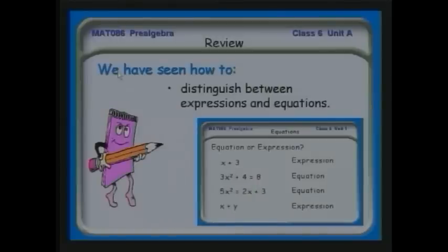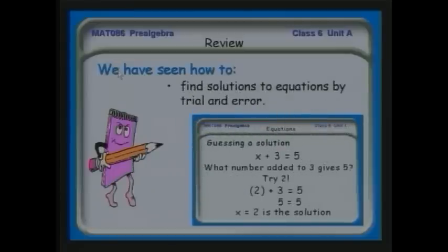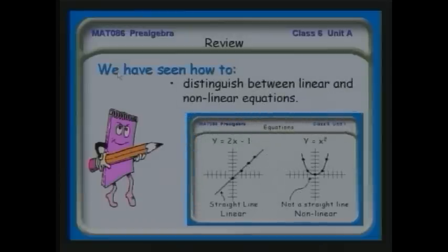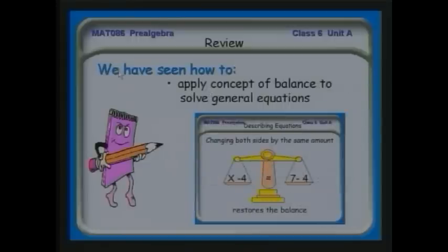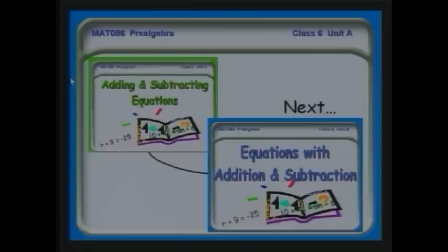That concludes all the material for Unit A. Let's review what we've done: we've seen how to distinguish between expressions and equations — equations have the equal sign. We've seen how to find solutions by trial and error — make a reasonable guess, plug it in, and check. We've distinguished between linear and nonlinear equations — linear equations have variables only to the first power. We've looked at the balance concept as a model for solving equations. Next time, in Unit B, we'll start solving equations with the addition and subtraction principle formally.